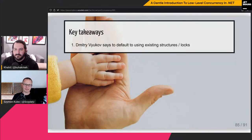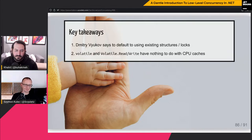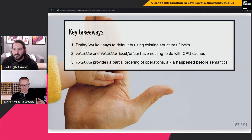Key takeaways: Dmitry Vyukov — responsible for the concurrent queue and much more — says to default to using existing structures and locks. But reading and understanding them is not prohibited. The volatile keyword, volatile read, and volatile write have nothing to do with CPU caches — CPU caches will act accordingly, but the understanding is that this is just about happens-before semantics and partial ordering of operations for external actors. If you write with volatile and read that value with volatile, you can be sure all writes that happened before will be visible to you.